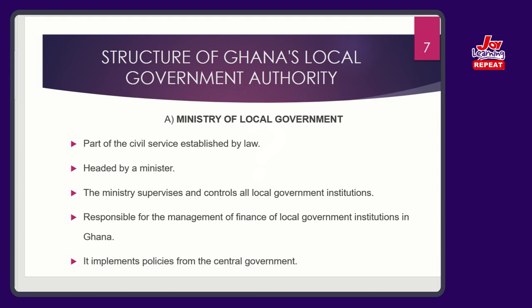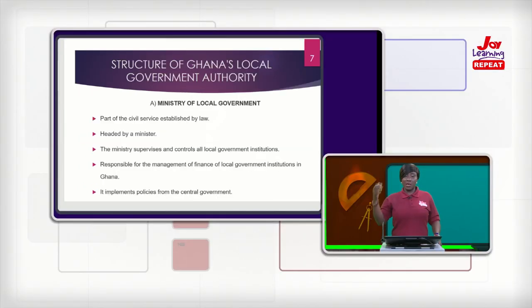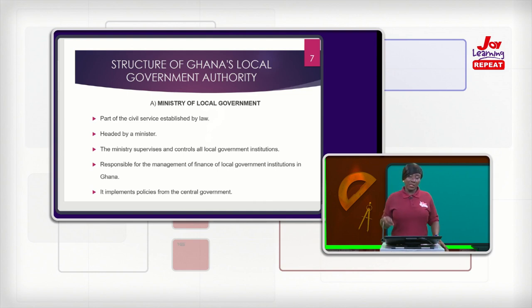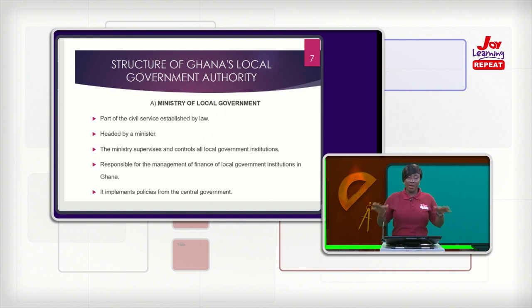You know what the civil service is? The executive arm of government has parts: the formulating parts, which is the president, the vice, and cabinet; and the implementation parts. That is where the civil service comes in. As part of the civil service, the Ministry of Local Government is, in effect, a body that enhances the implementation of policies that help the development of local areas in Ghana. It is normally headed by a minister.